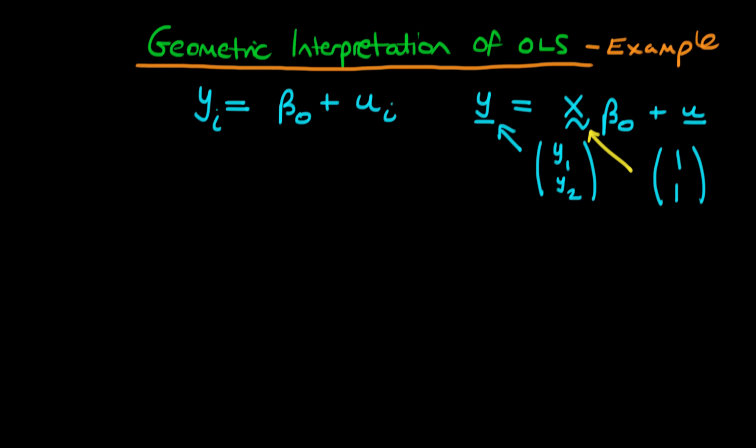Okay, so how can we think about this situation geometrically? Well we can draw out our sort of space here. So we're dealing with two observations here, so we're going to be dealing with two dimensional space. And let's assume for sake of argument that y1 and y2 are equal to the points 2 and minus 1 respectively.